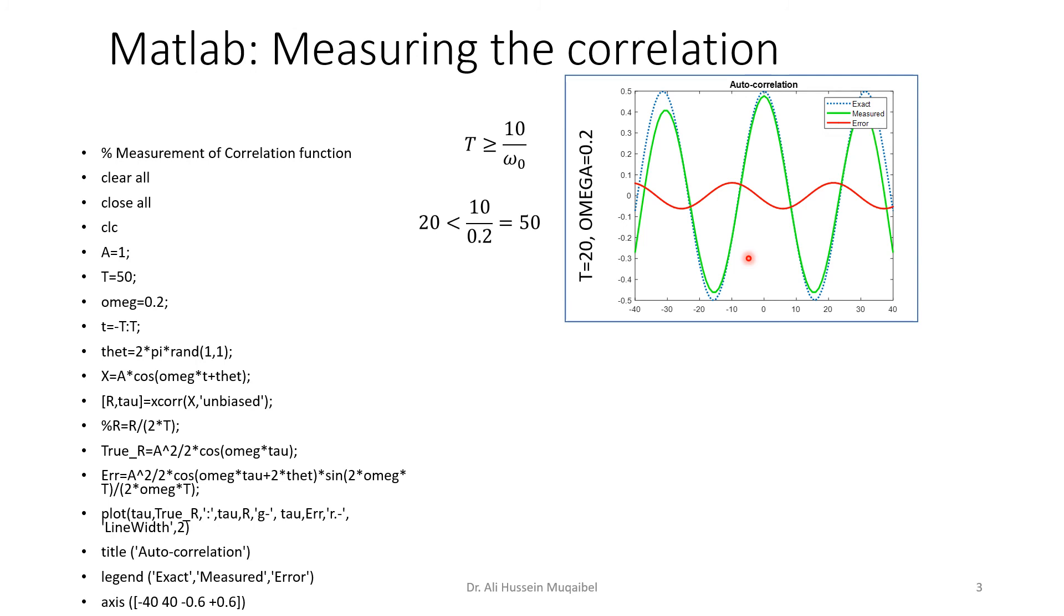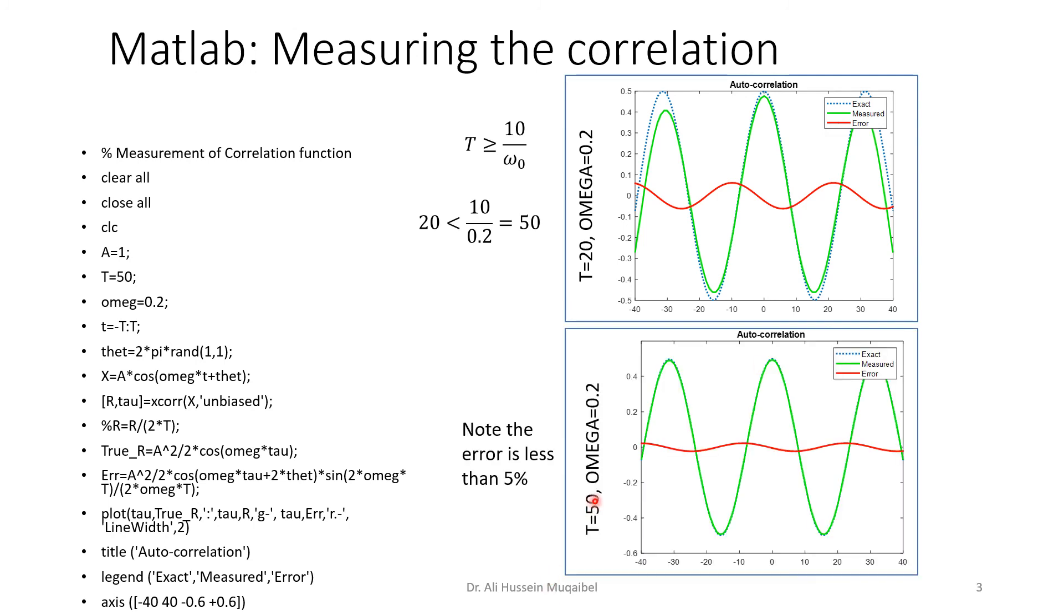Now, I said let me increase the period. So I went from 20 to 50, which is just barely the limit, where 50 will equal to 50, which will just satisfy the condition. You can see that our error is now less than 5%, and the exact and measured curves are almost the same. The error becomes small. I'm just showing the period from -40 to +40. If you run the code again, you might get different results because we are generating a random phase, but the concept will remain the same.